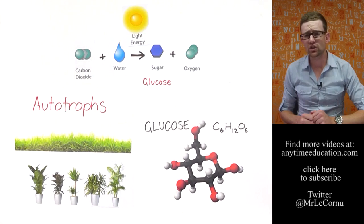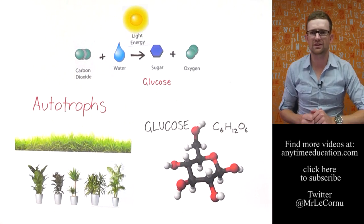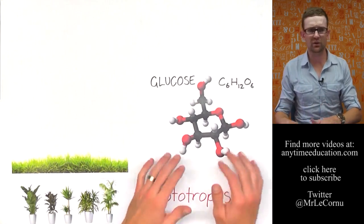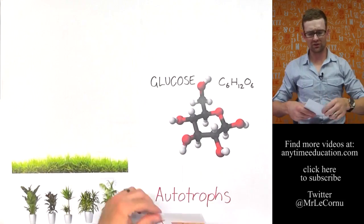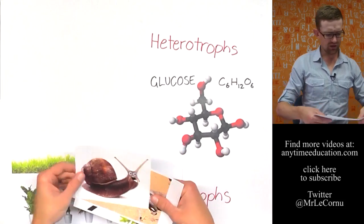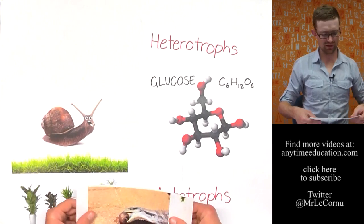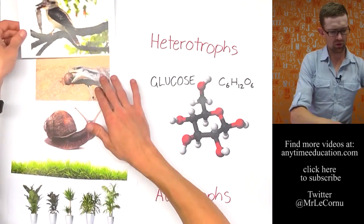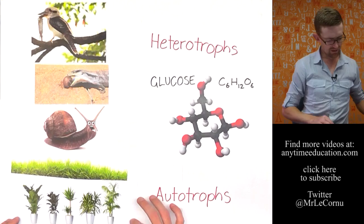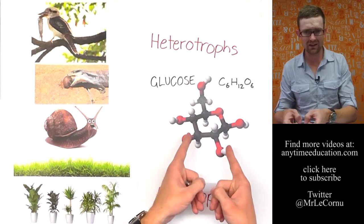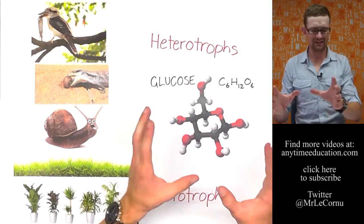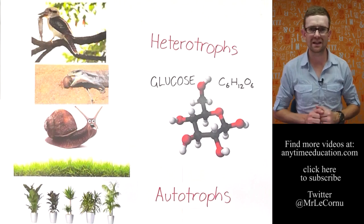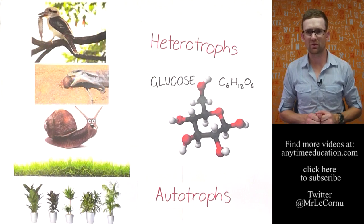They make glucose because they use it as a source of energy. In fact, pretty much all organisms use glucose as a source of energy. Autotrophs are able to make glucose themselves, whereas heterotrophs are not. The snail, the lizard eating the snail, and the kookaburra eating the lizard are examples of heterotrophs because they can't make their own glucose. They need to obtain glucose by consuming or eating other organisms or their products.